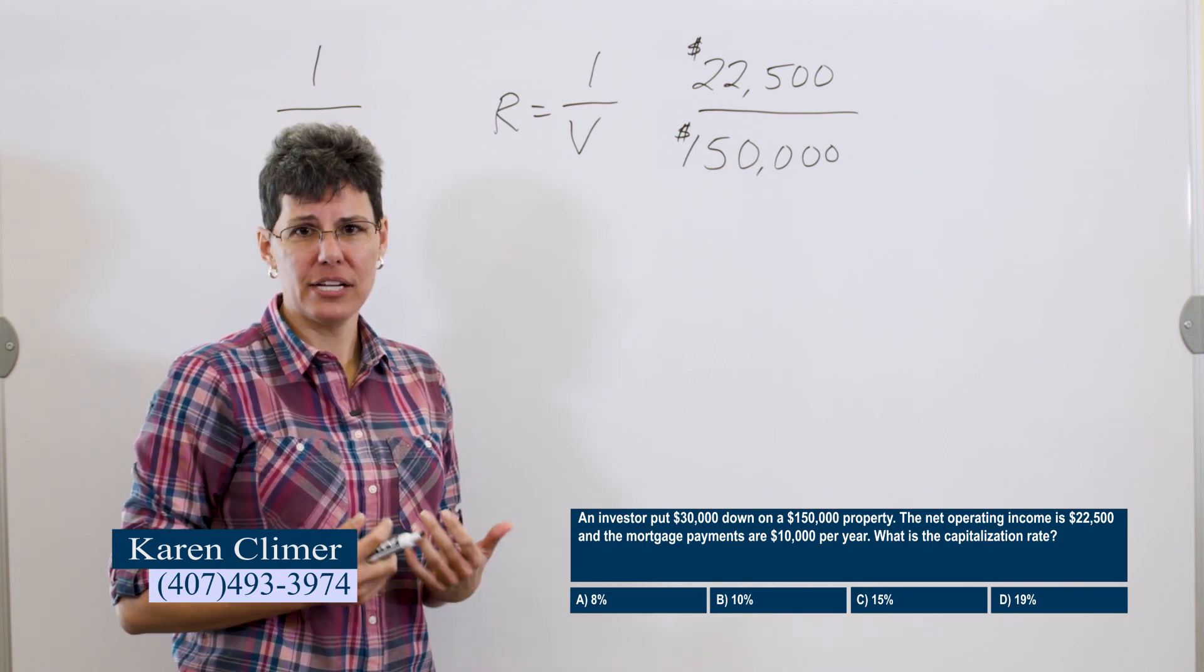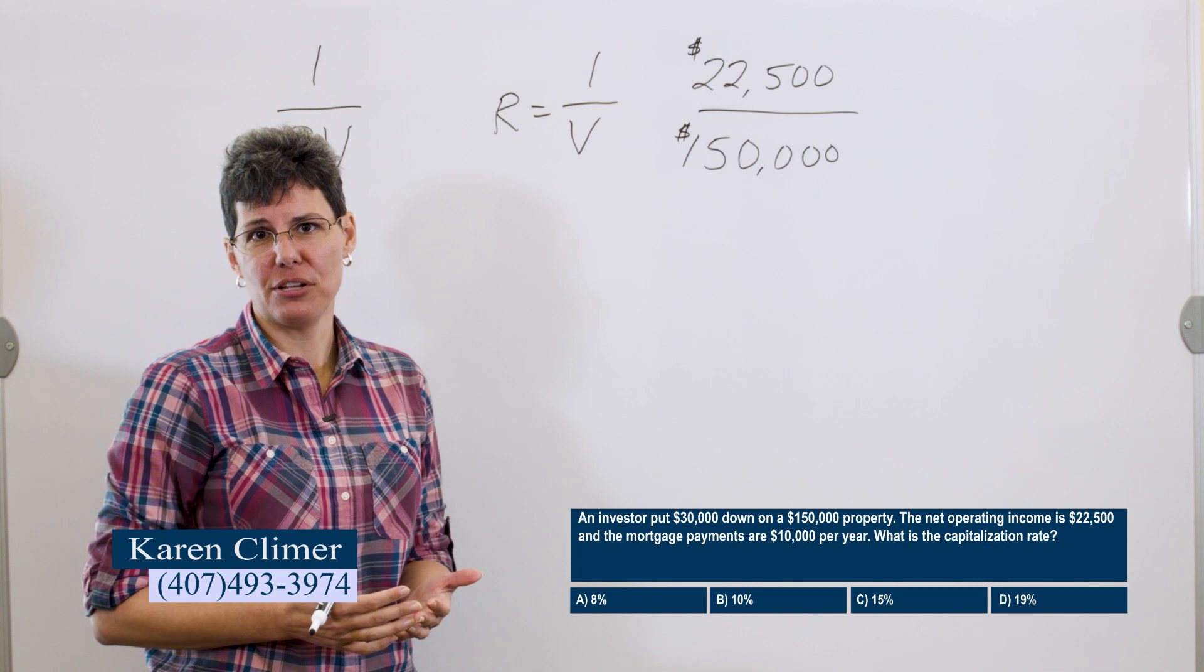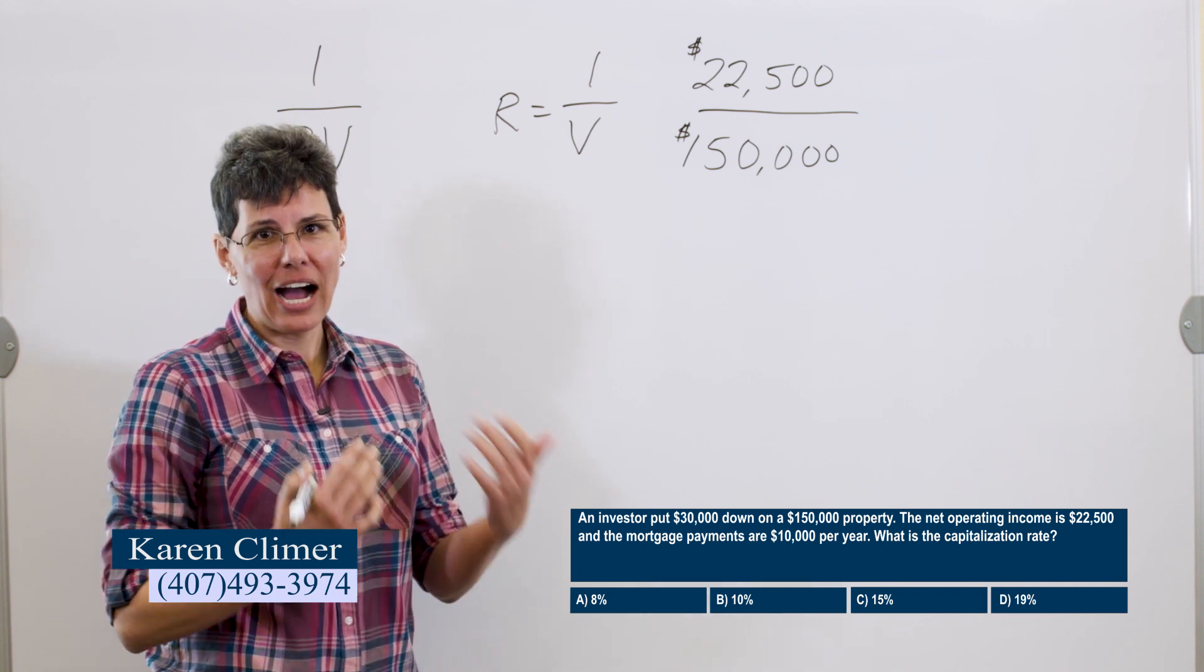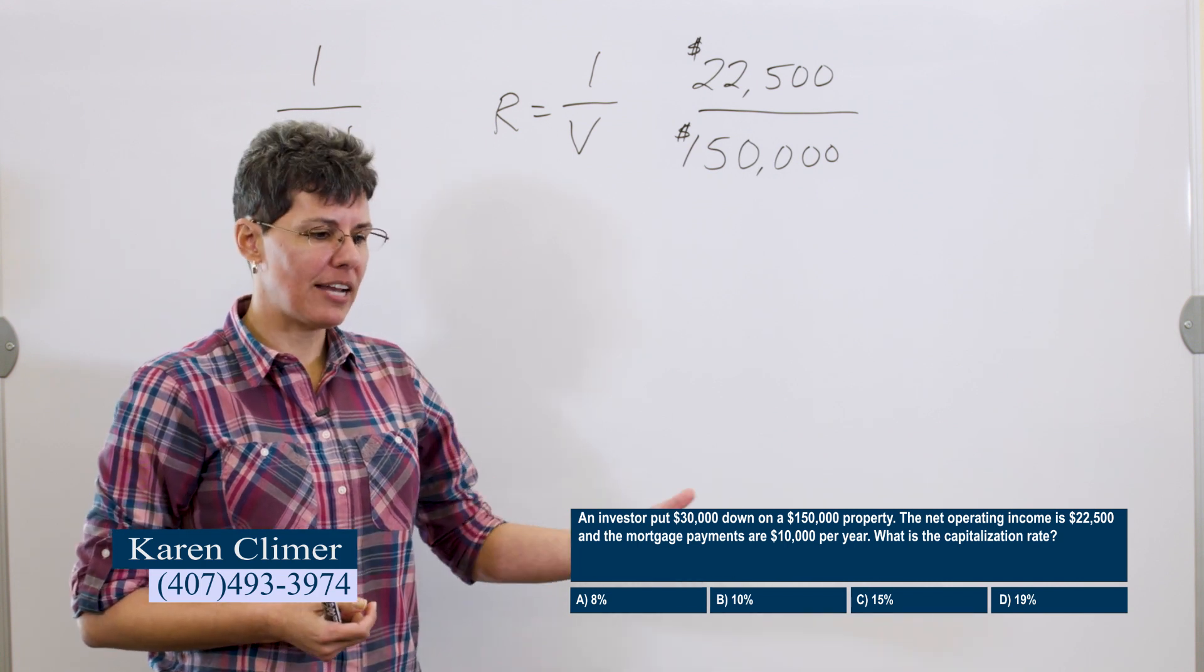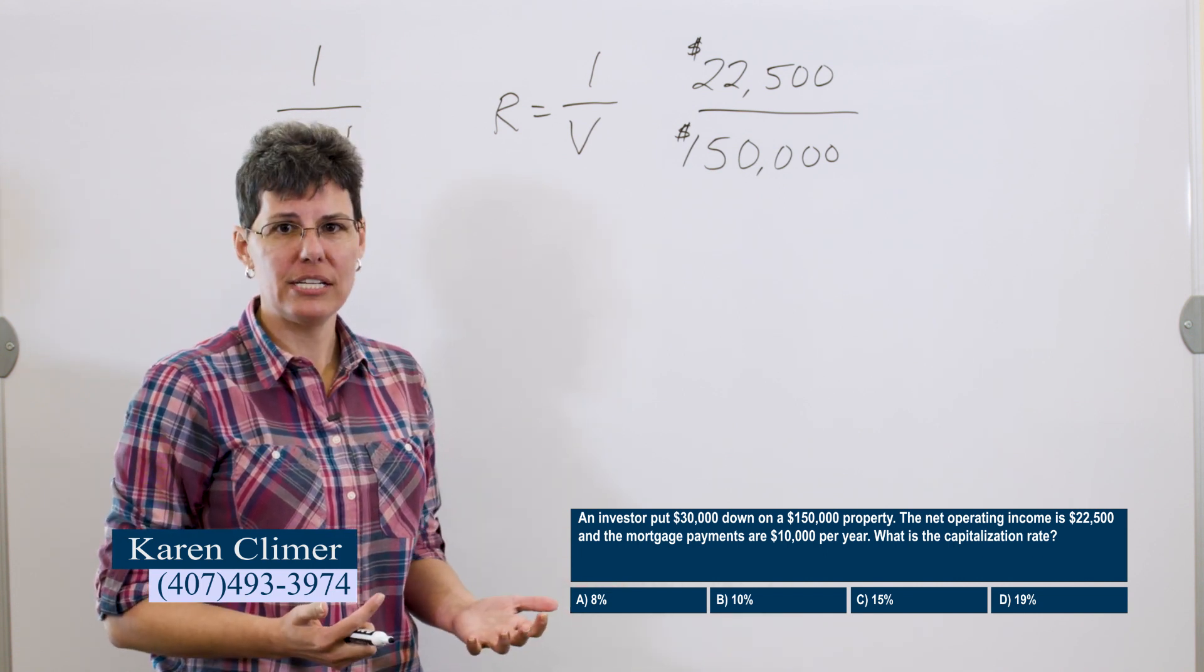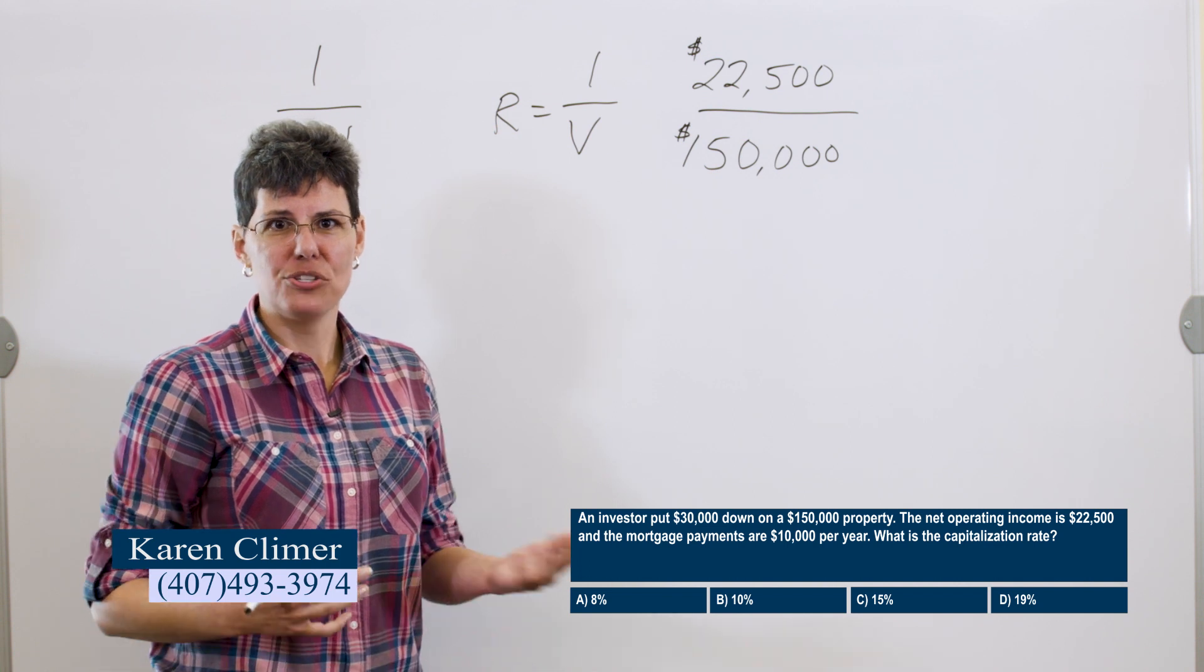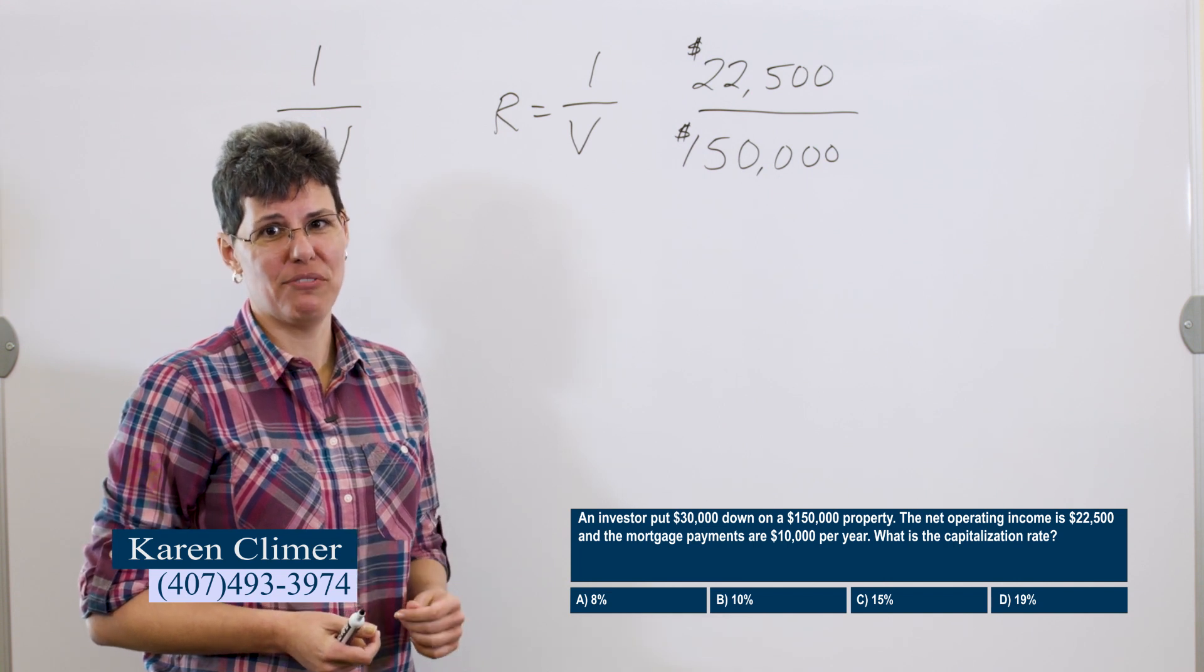I make a big point of this because it's a way they'll trick you on the exam. The reason it's not an expense of the property is because if Mr. Billionaire were buying a $150,000 property, he could pay cash for it. But if I were buying a $150,000 property, I would need to get a mortgage. So the mortgage is a personal problem. But you compare that to something like insurance or the salaries of the property manager or utilities. I would need insurance on the property and Mr. Billionaire would need insurance on the property. So that's an expense of the property. So it's important to know that the mortgage is not an expense of the property.